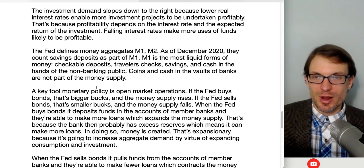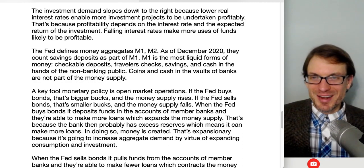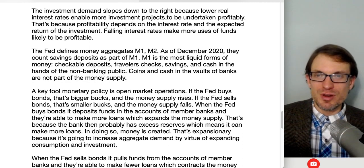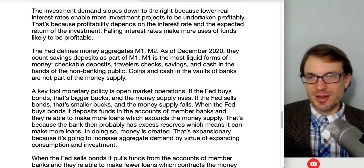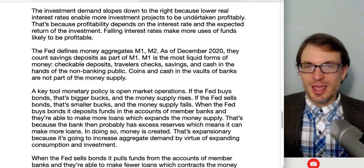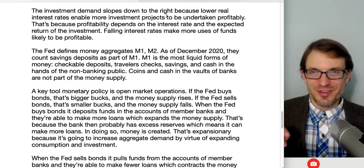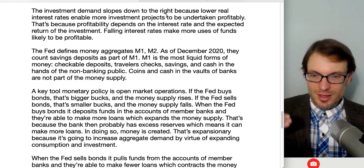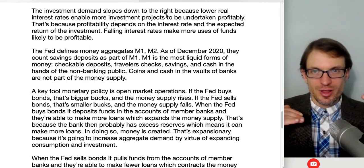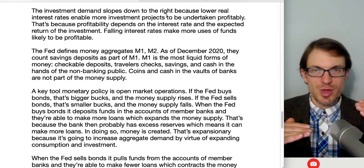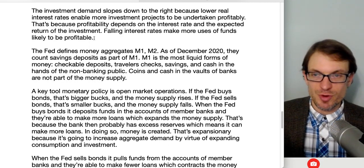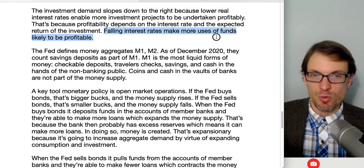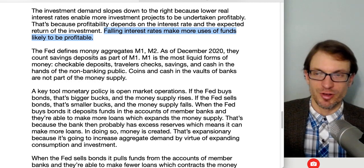The investment demand curve slopes downward to the right because lower real interest rates enable more investment projects to be undertaken profitably. On the vertical axis is the interest rate; the horizontal axis is the quantity of funds demanded for investment. At a lower interest rate, there's a larger quantity of funds demanded for investment because more investments have a rate of return that exceeds that interest rate. Profitability depends on the interest rate and the expected return — falling interest rates make more uses of funds likely to be profitable.